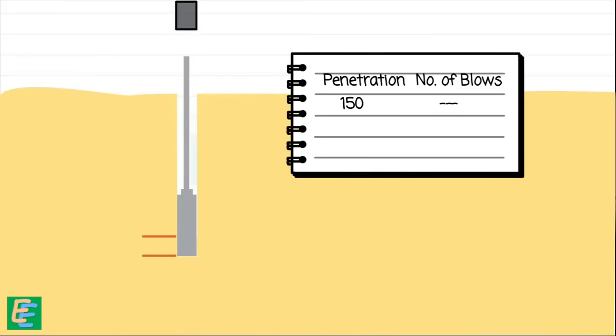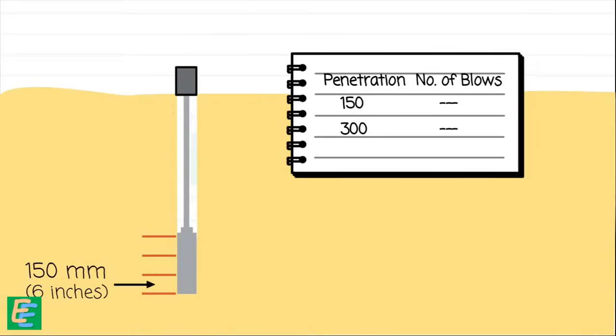Then we hammer the sampler again to push it further deep by another 150 mm and record the number of blows for that as well. Finally, we repeat this process one last time for an additional 150 mm, giving us a total penetration depth of 450 mm and a complete record of the number of blows required for each 150 mm penetration.